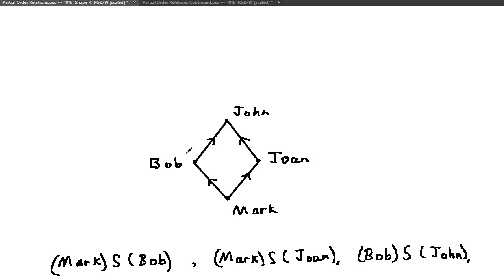As you can see in the diagram, Mark comes before Joanne, but Joanne doesn't come before Mark. Only one of them can come before the other. The arrows point in only one direction.